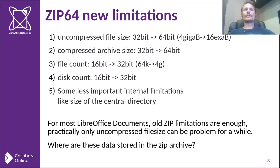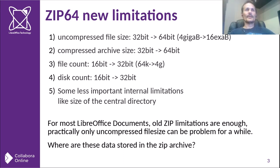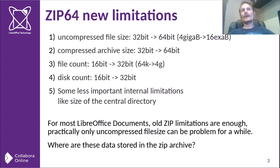So what limitations does the extension address? First, the most important is the uncompressed file size, which was at max 4GB before the extension, and now it's so huge we can't foresee when we will reach it. The uncompressed file size means the files which we want to compress. The second is the compressed archive size. It's similar to the previous, but it's harder to reach these limitations, because when we compress the files they will be smaller — maybe a hundred times smaller, depending on the file. It's less important for us now, because even the uncompressed file size is hard to reach 4GB with LibreOffice.